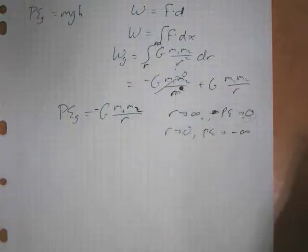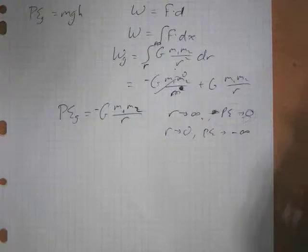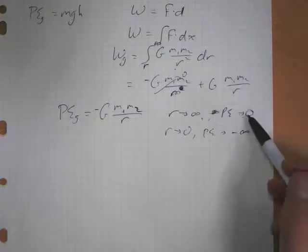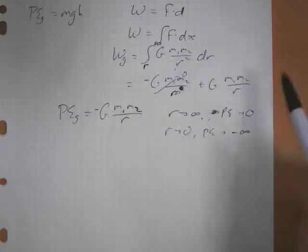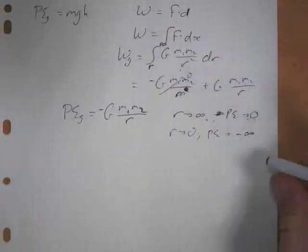So potential energy is always a scalar. And so it does decrease as we get closer to the surface of the Earth, but it's decreasing by becoming a larger negative number.